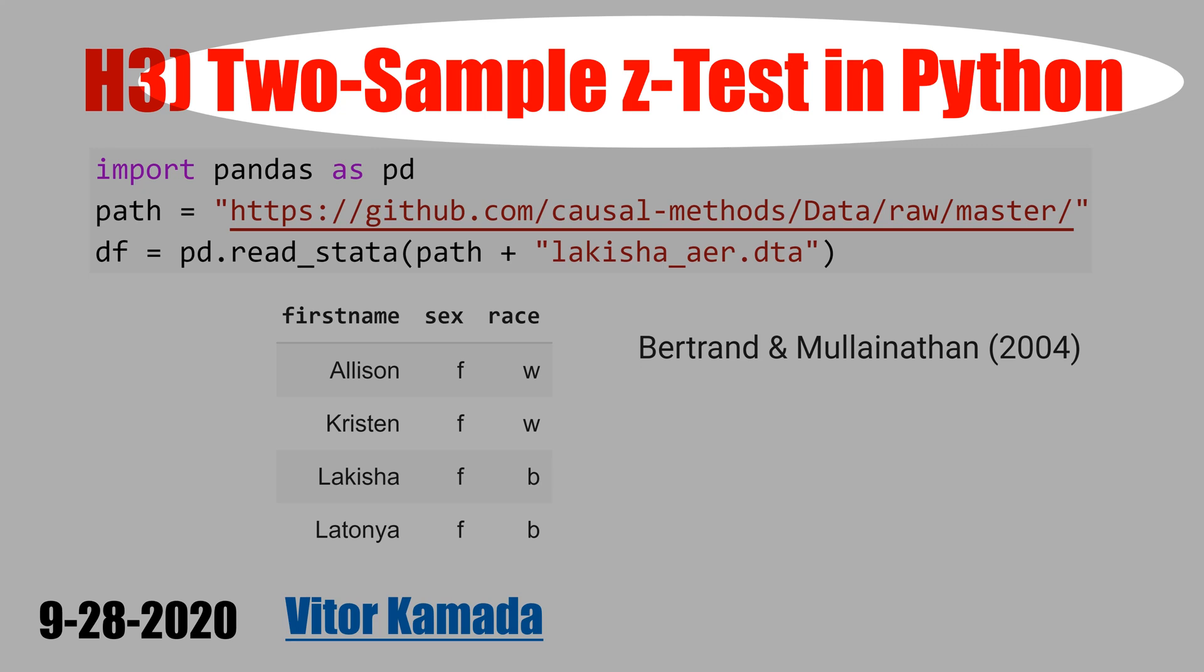In this video, let's learn how to do a two-sample z-test in Python. I'm using the data from this paper here. We have the variable race here, and we're going to compare these two groups, white and black people.